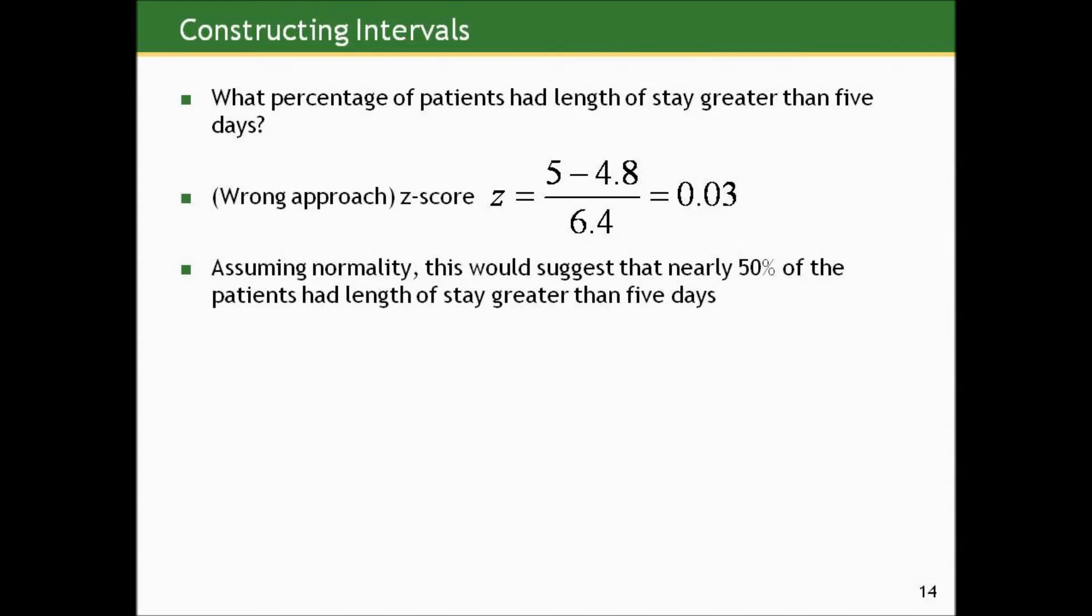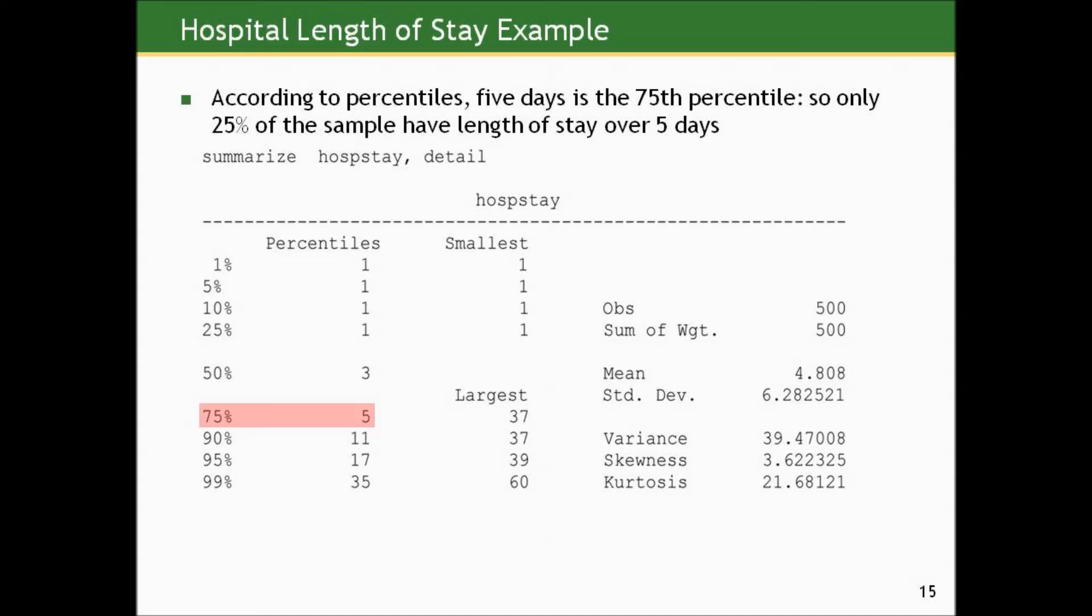How about if I ask you this? What percentage of the patients had a length of stay greater than 5 days? Well, let's see what we would get if we used the approach we would do for a normal curve. So suppose we compute the Z-score for this. Z would equal 5, our observation, or our cut point of interest, minus the mean of 4.8, and divided by the standard deviations of 6.4. The Z-score is 0.3. Our result 5 days is only 0.3 standard deviations above that mean of 4.8. So assuming normality, this would actually suggest that nearly 50% of the patients had a length of stay greater than 5 days.